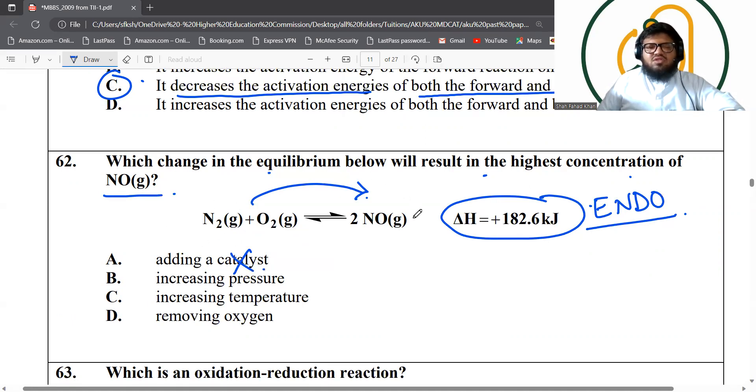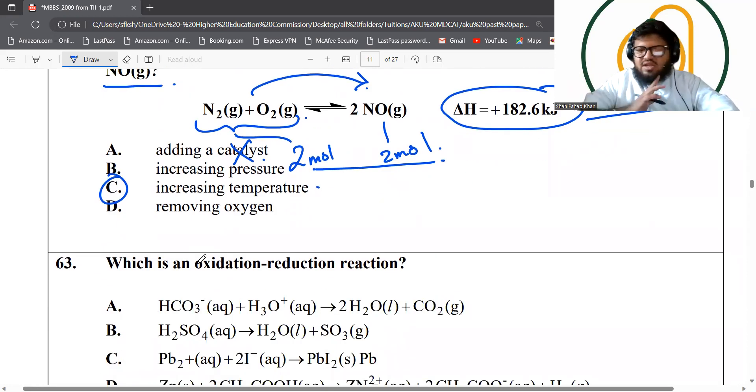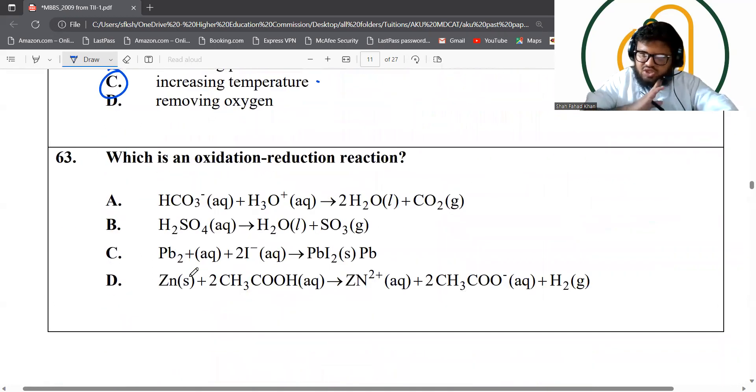A catalyst has no effect on the yield because it doesn't affect the position. Pressure also doesn't have any effect because pressure depends on the number of gases, moles that you have. You've got two moles of gases over here and two moles of gases here. They are equal, hence no pressure changes. Temperature increase, yes, that will affect it because it's endothermic. So it's going to shift it to the right side, increasing the nitric oxide concentration.